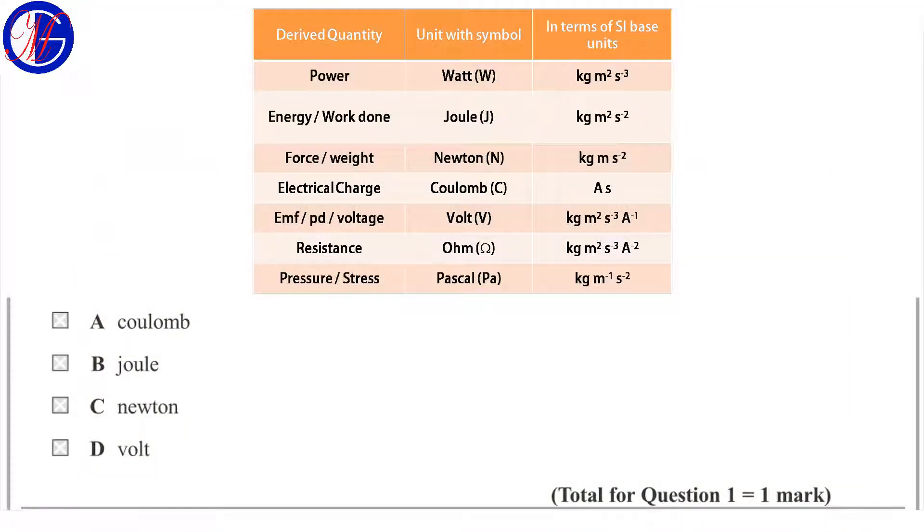According to this table, you can see Coulomb is the unit of charge or electrical charge. Joule is the unit of energy or work done.